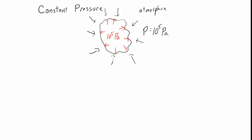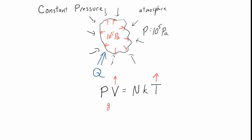Suppose we feed some heat into this cloud. Normally we'd expect that heat to increase the temperature of the gas. But if we look at the ideal gas law, if the temperature rises, then either the pressure or the volume has to rise. Since the pressure is constant at 10 to the fifth pascals, as the temperature rises, the volume has to rise as well. And if the volume rises, that means the gas is doing work on its environment.